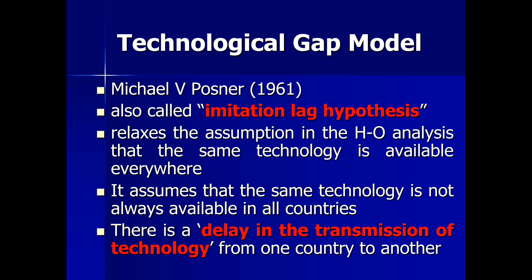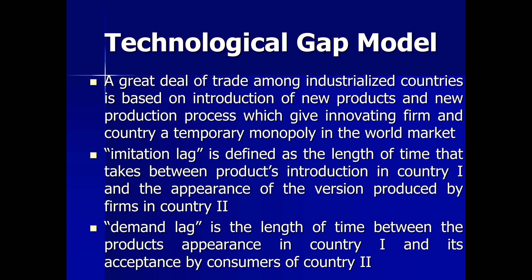The technological gap model, as envisaged by Michael V. Posner, also called the imitation lag hypothesis, relaxes the assumption of the H-O model that same technology is available everywhere, and argues that there is a delay in the transmission of technologies across countries. The model argues that whenever a product is introduced, it provides a temporary monopoly for those firms in the innovating country. An imitation lag is defined as the length of time that takes place between a product's introduction in country 1 — the innovating country — and the appearance of a version of the product in country 2, the imitating country.